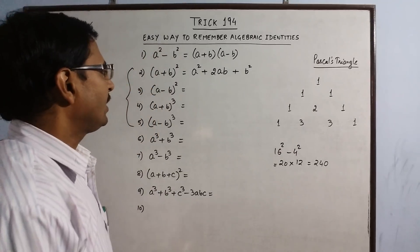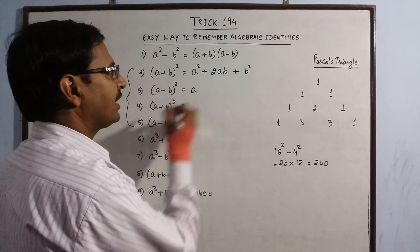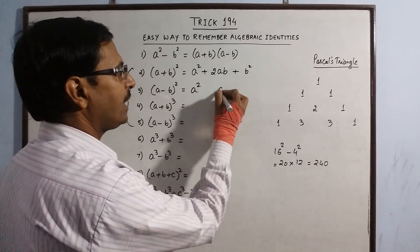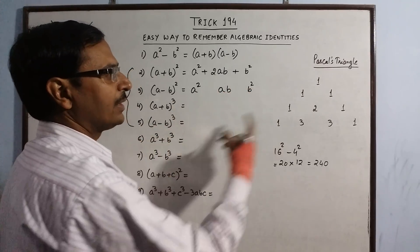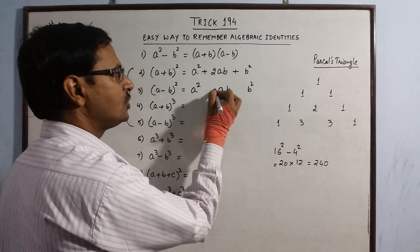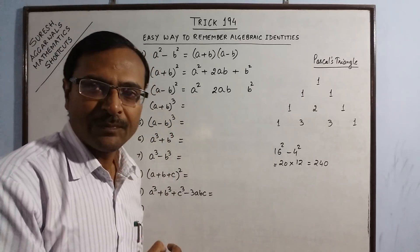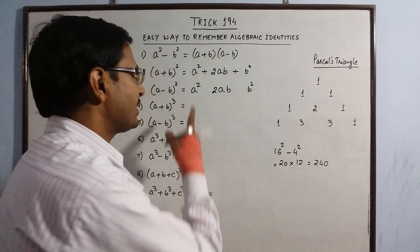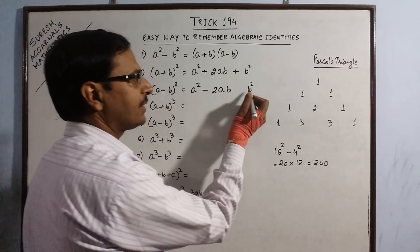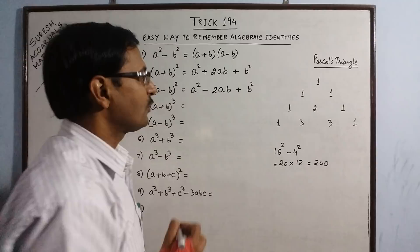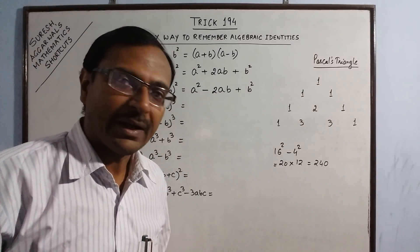Similarly for A minus B whole square, we write the same terms: A square, A, no A, then B square, B, no B, with coefficients 1, 2, 1. Whenever we have a negative sign in between, the first term will be positive, second will be negative, and third will be positive — so we put alternate positive and negative signs to get the final identity.